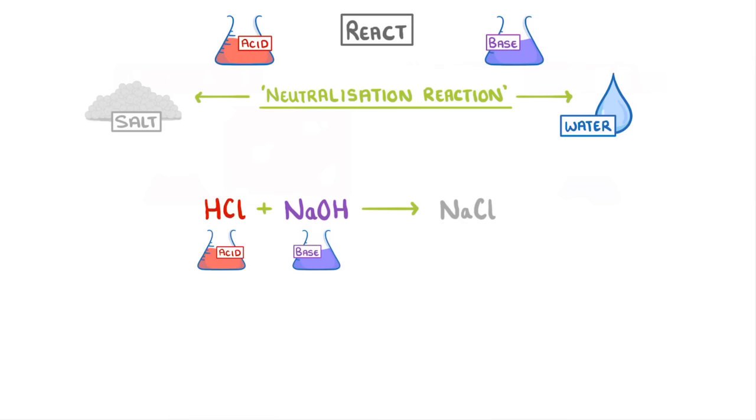Another way to show these neutralisation reactions is in terms of hydrogen ions and hydroxide ions, where H+ from the acid and OH- from the base combine to form H2O. And because the acid and base have both been neutralised in these sorts of reactions, the pH of the products should be 7 because they're neutral.